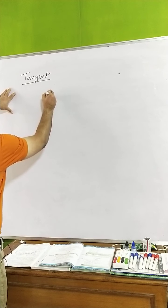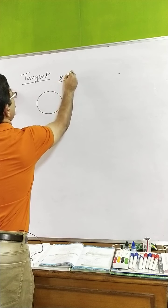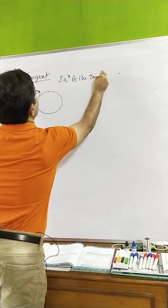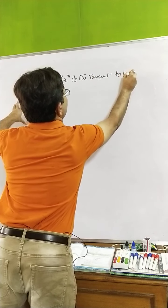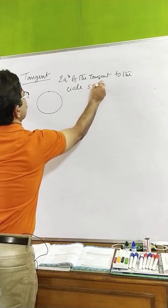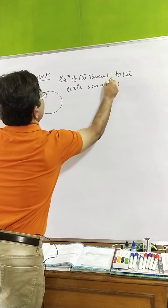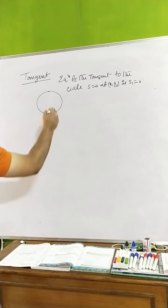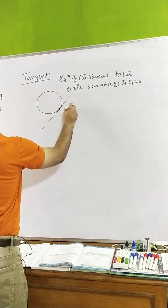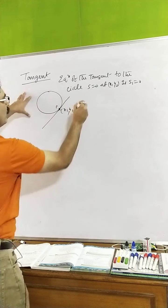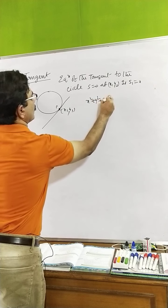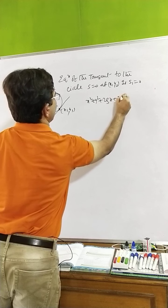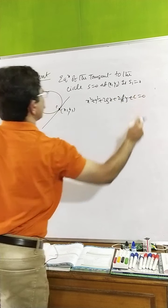The equation of the tangent to the circle S=0 at point (x1, y1) is S1=0. Let us say that point P is at (x1, y1). The circle S=0 is the standard equation: x² + y² + 2gx + 2fy + c = 0.